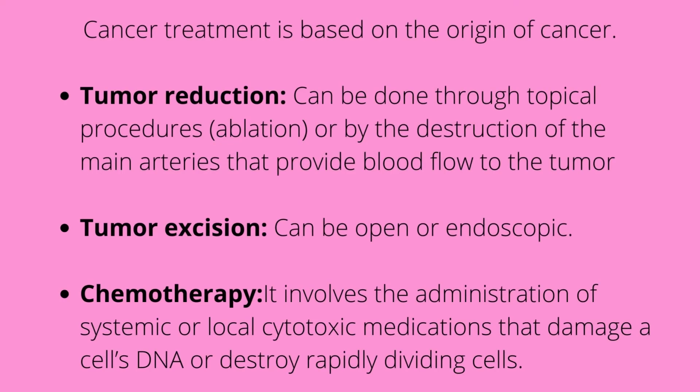Cancer treatment is based on the origin of the cancer — wherever the cancer starts. We can treat it by tumor reduction, which can be done through topical procedures or by destruction of the main arteries that provide blood flow to the tumor. If you cut the supply, whatever is above it is not going to get fed, so it's not going to continue growing. We can do tumor excision, which can be open or endoscopic. We can also do chemotherapy, which involves the administration of systemic or local cytotoxic medication that damages the cell's DNA or destroys rapidly dividing cells.